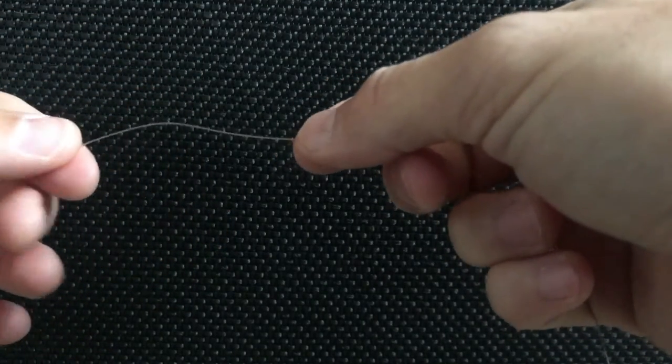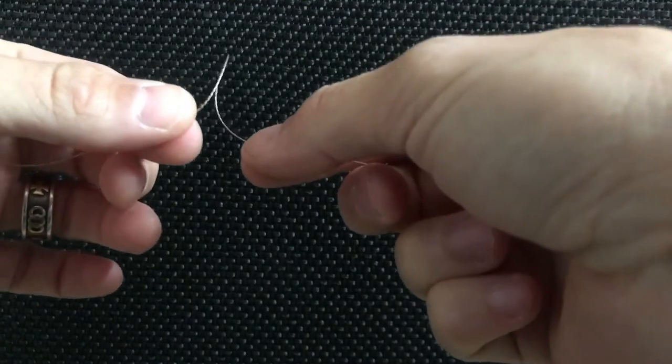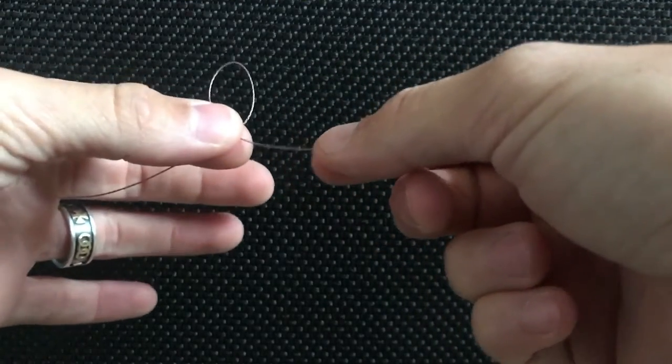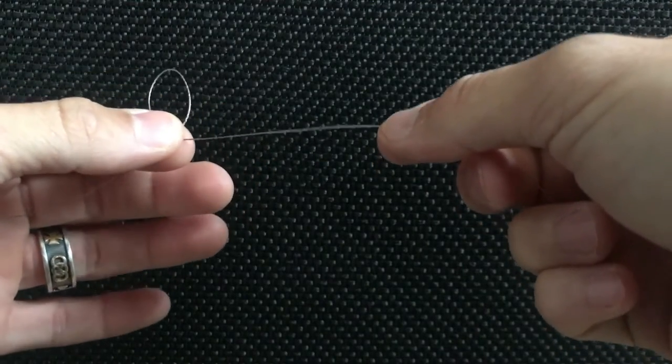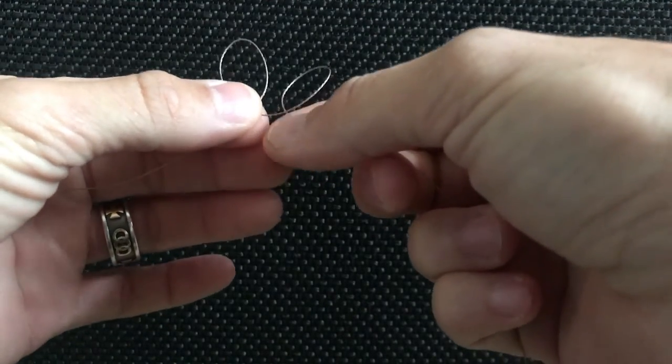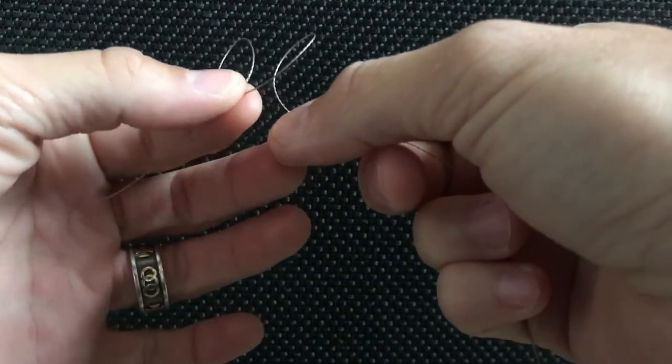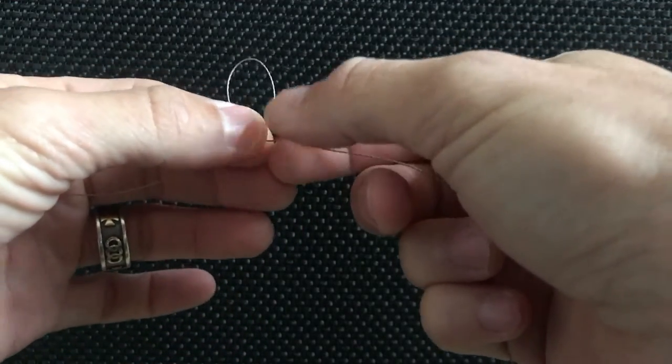Go left over right, so the left loop goes over the right. You can do that again, left over right, so you can see how the left line is over the right line.